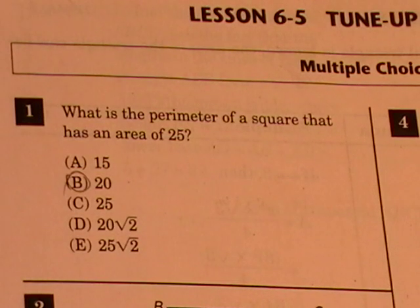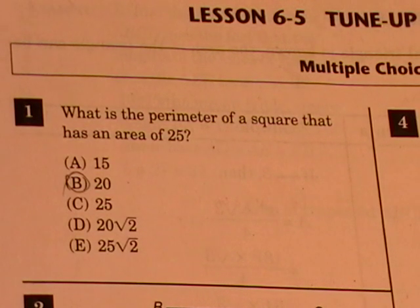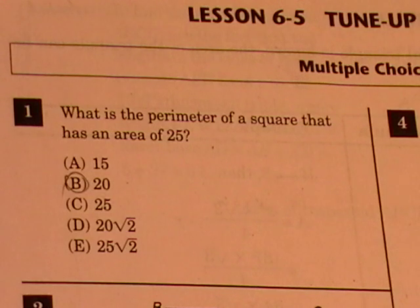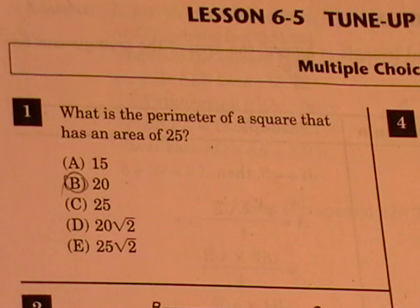This is a two-dimensional quadrilateral problem. It states, what is the perimeter of a square that has an area of 25? There are answer choices A through E.